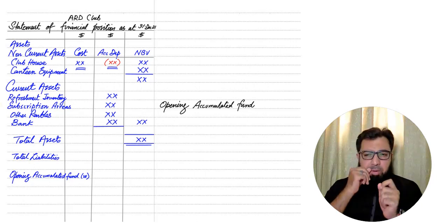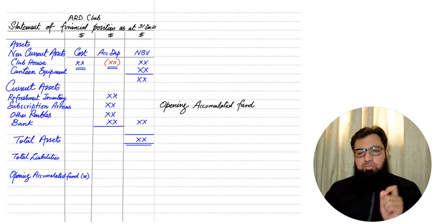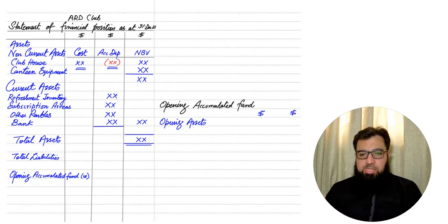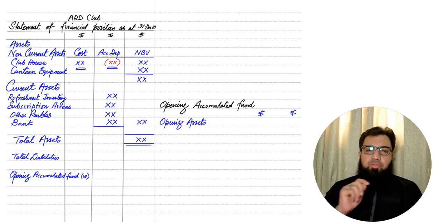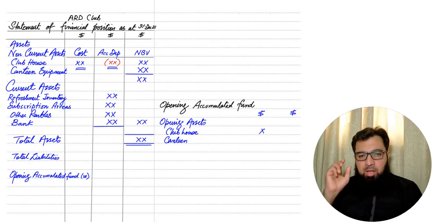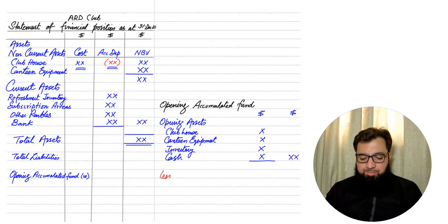So how do we calculate the opening accumulated fund? As you may be aware from studying single entry and incomplete records — which not-for-profit organizations use — opening capital is calculated by deducting opening liabilities from opening assets. All assets come here: non-current and current assets, all at their start-of-year values on 1st January. So the clubhouse value is the start-of-year value, the canteen equipment is also the start-of-year value, and we write opening inventory to calculate opening capital.